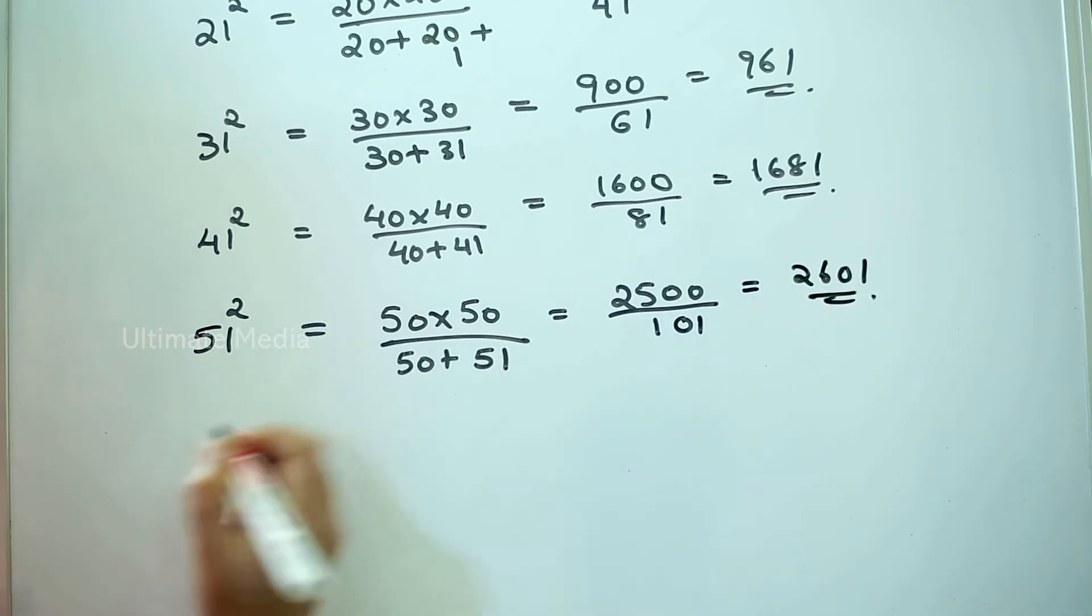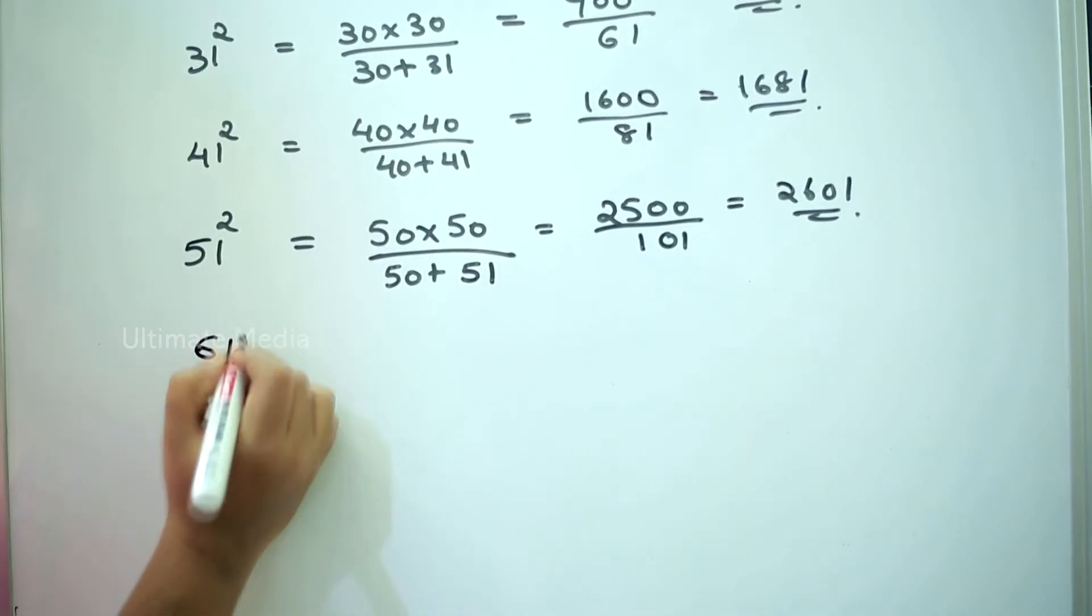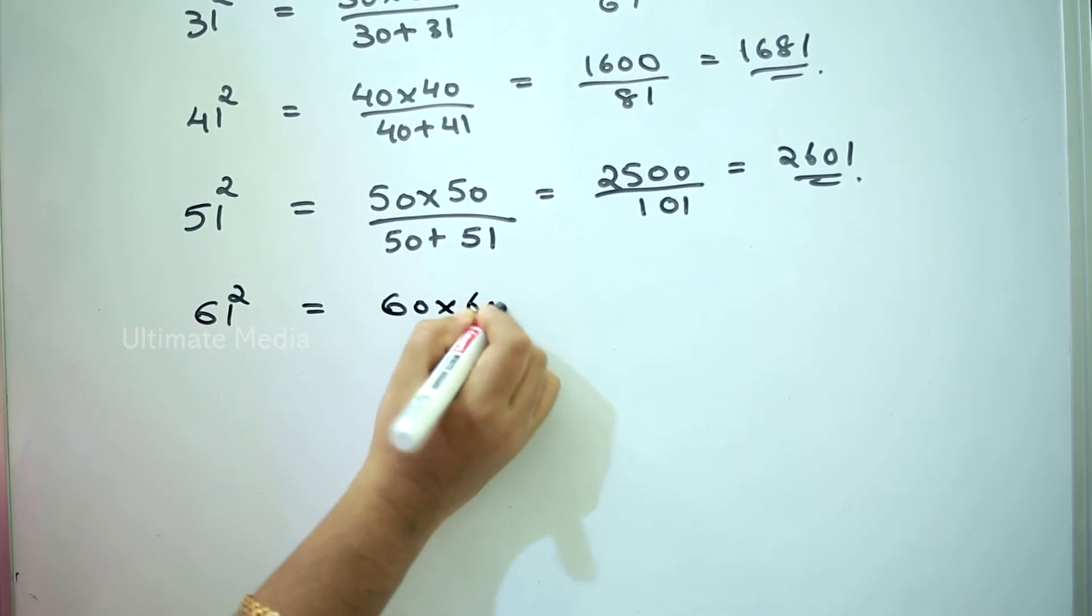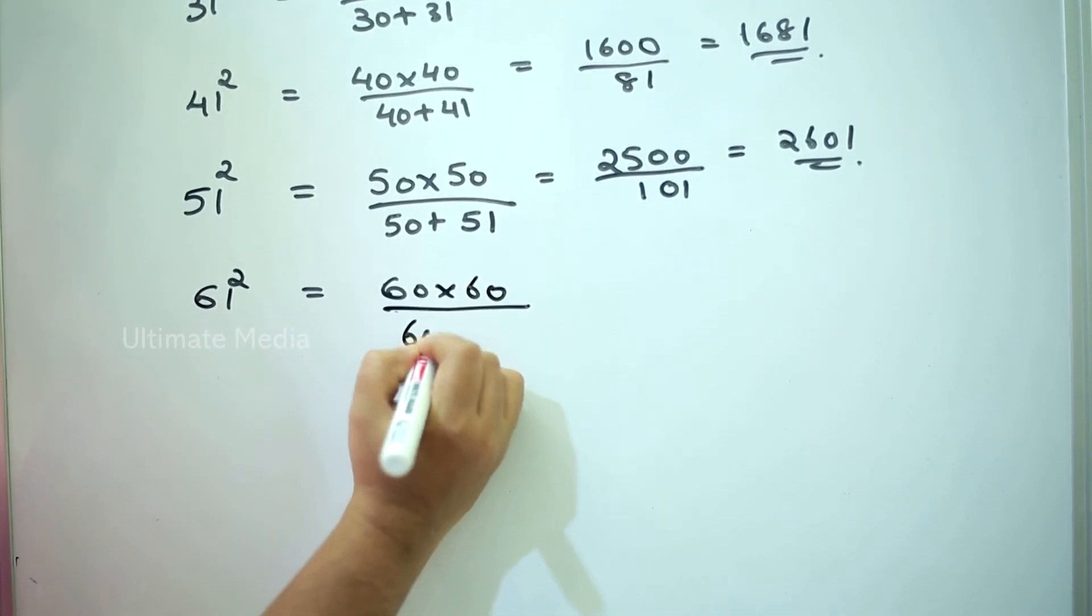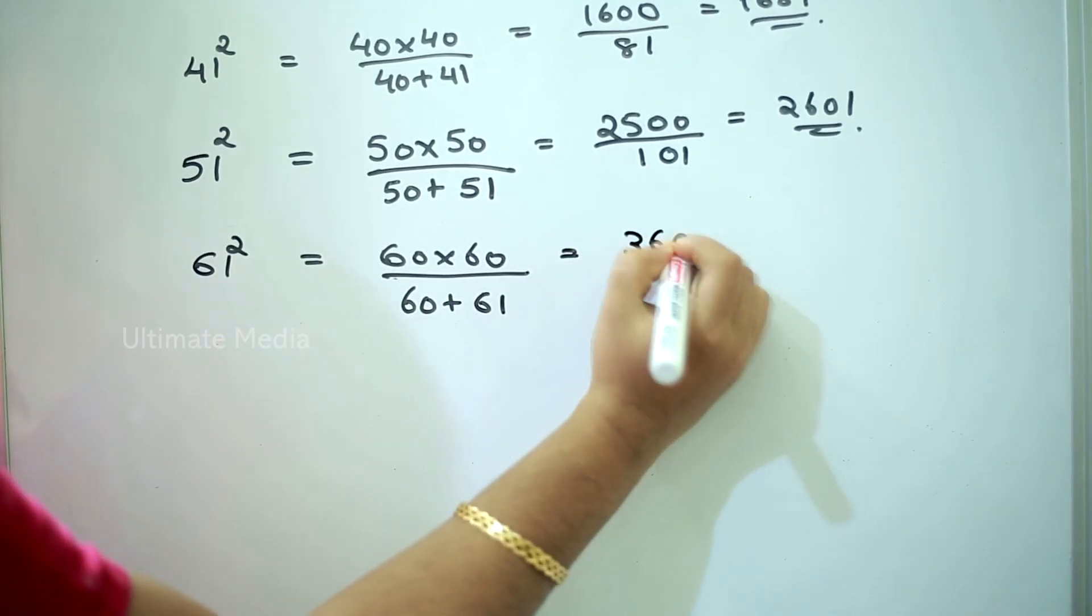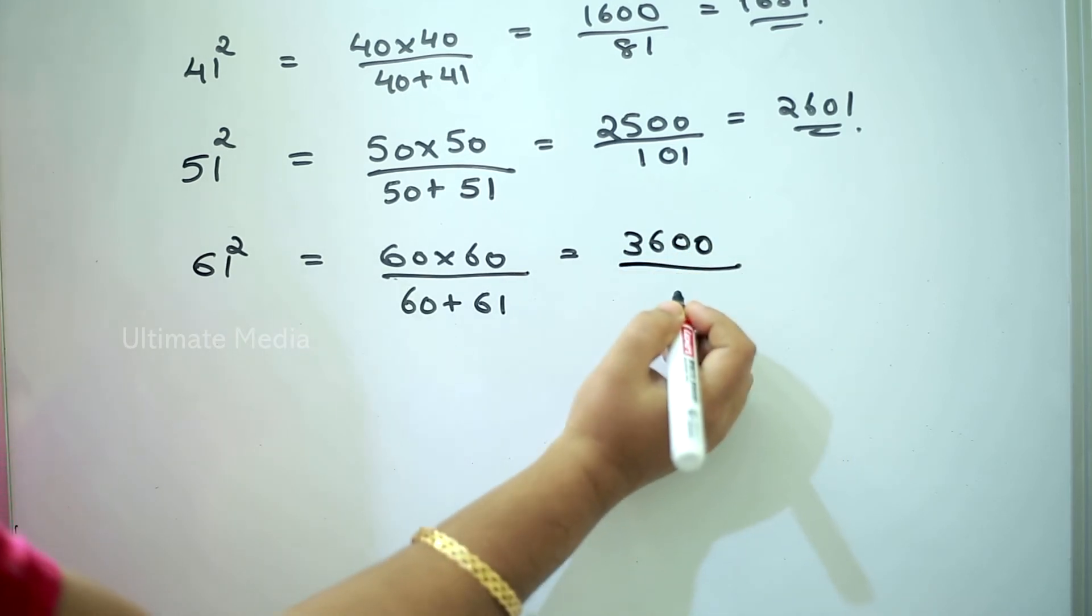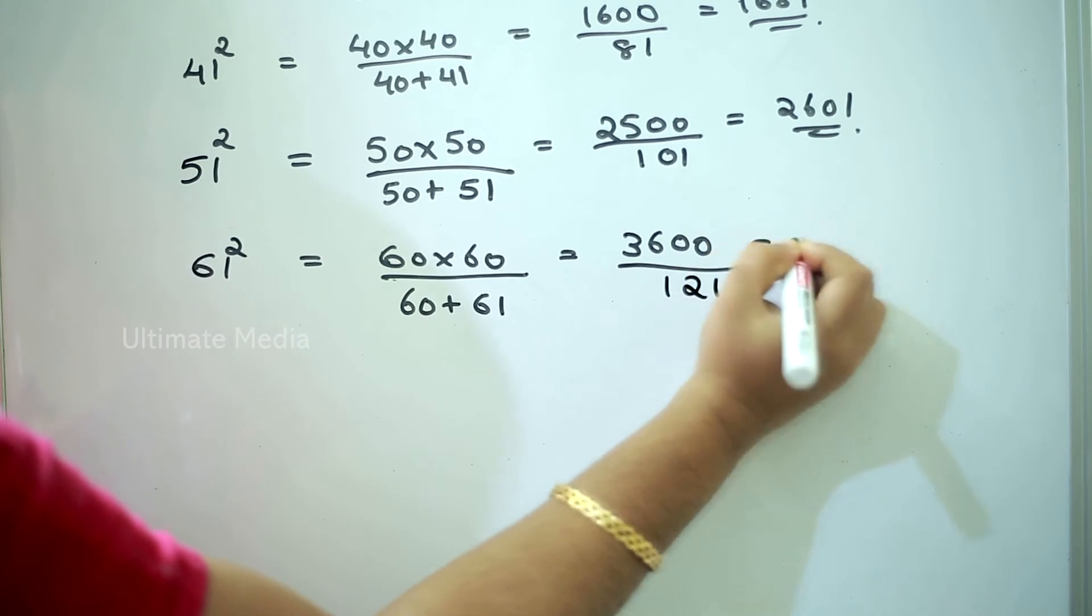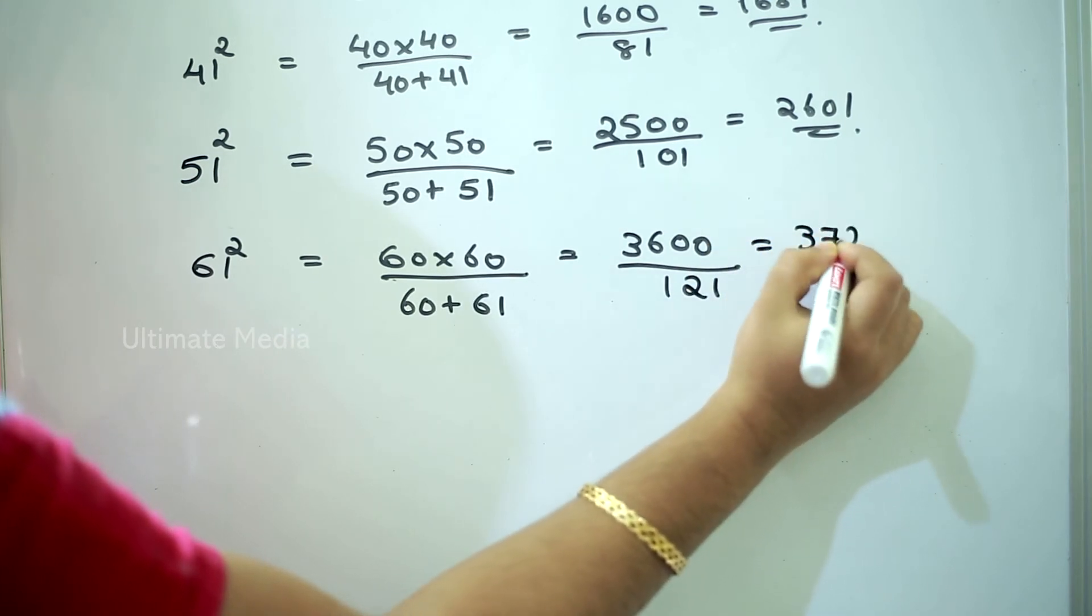Next, 61 square: 60 into 60 divided by 60 plus 61. That's 3600 divided by 121, which equals 3721.